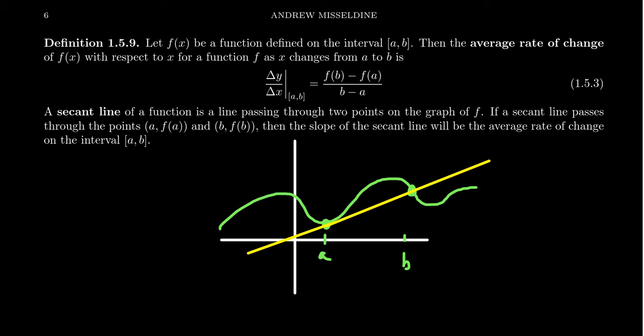And so this line is commonly referred to as a secant line. This is based off of trigonometry, because if you have a circle, a secant line is a line that intersects the circle at two different places. So we're kind of playing along that analogy right there. A secant line is going to be a line that passes through a function at two distinct points.